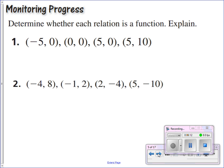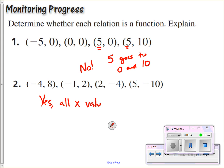For number five, here are a couple to try on your own. The first one is not a function — the reason is we've got five leading to two different outputs. Five goes or maps to zero and ten, two different outputs for that one input. For number two, that one is a function because all x values lead to one y value. No one x value leads to two different y values.